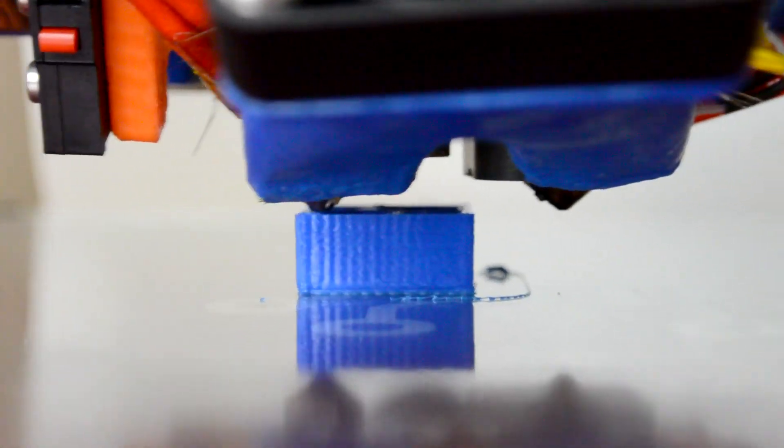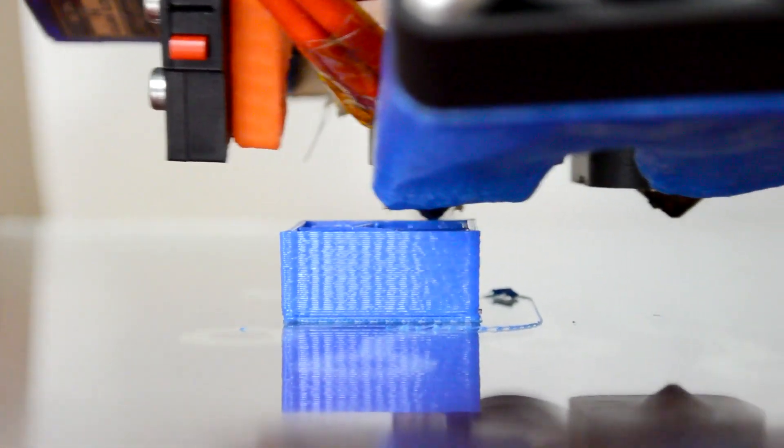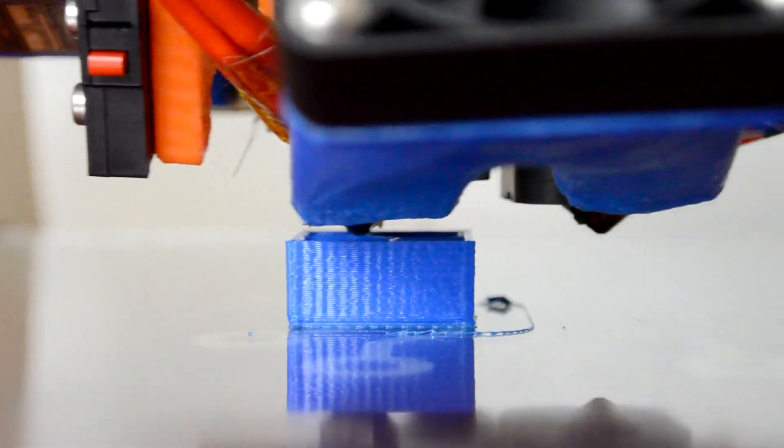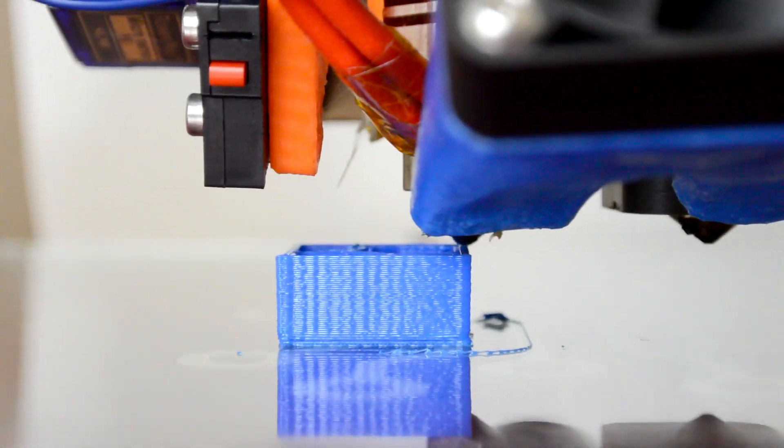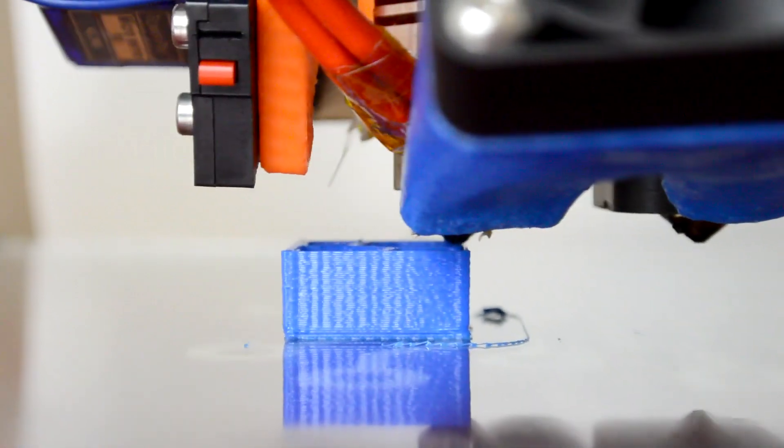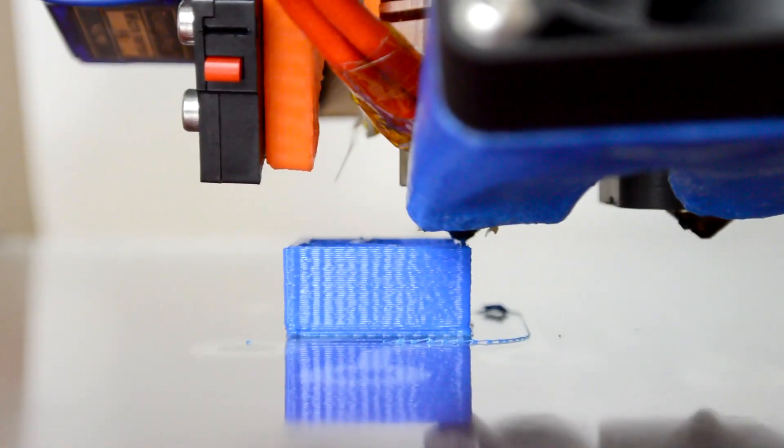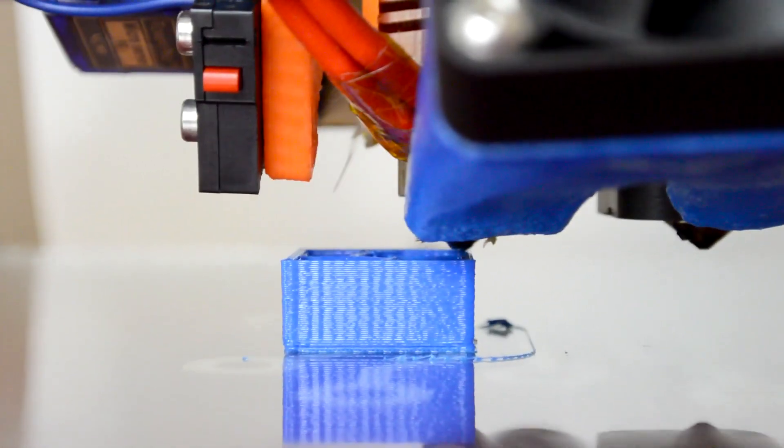And as you can see, this nozzle is unclogged and it's printing beautifully. So with a little bit of acetone, a little bit of heat and a whole lot of patience, we were able to successfully unclog that nozzle. So that's going to be it for the episode. If you guys have had a clogged nozzle and were able to find a technique that worked for you, please leave it in the comments down below. I would love to know what you did to unclog your own 3D printer nozzle. So thank you guys for watching and I'll see you guys next time.